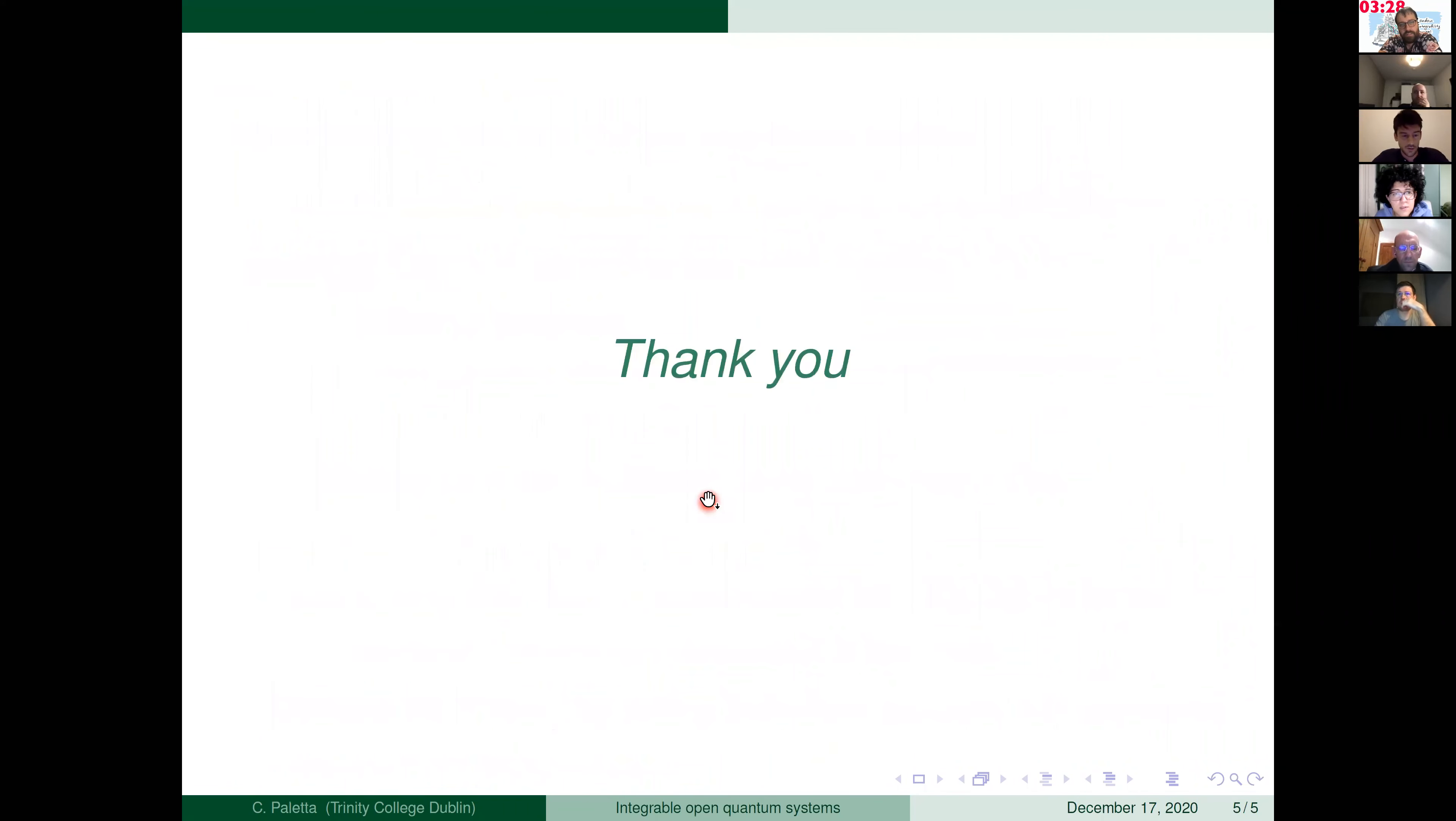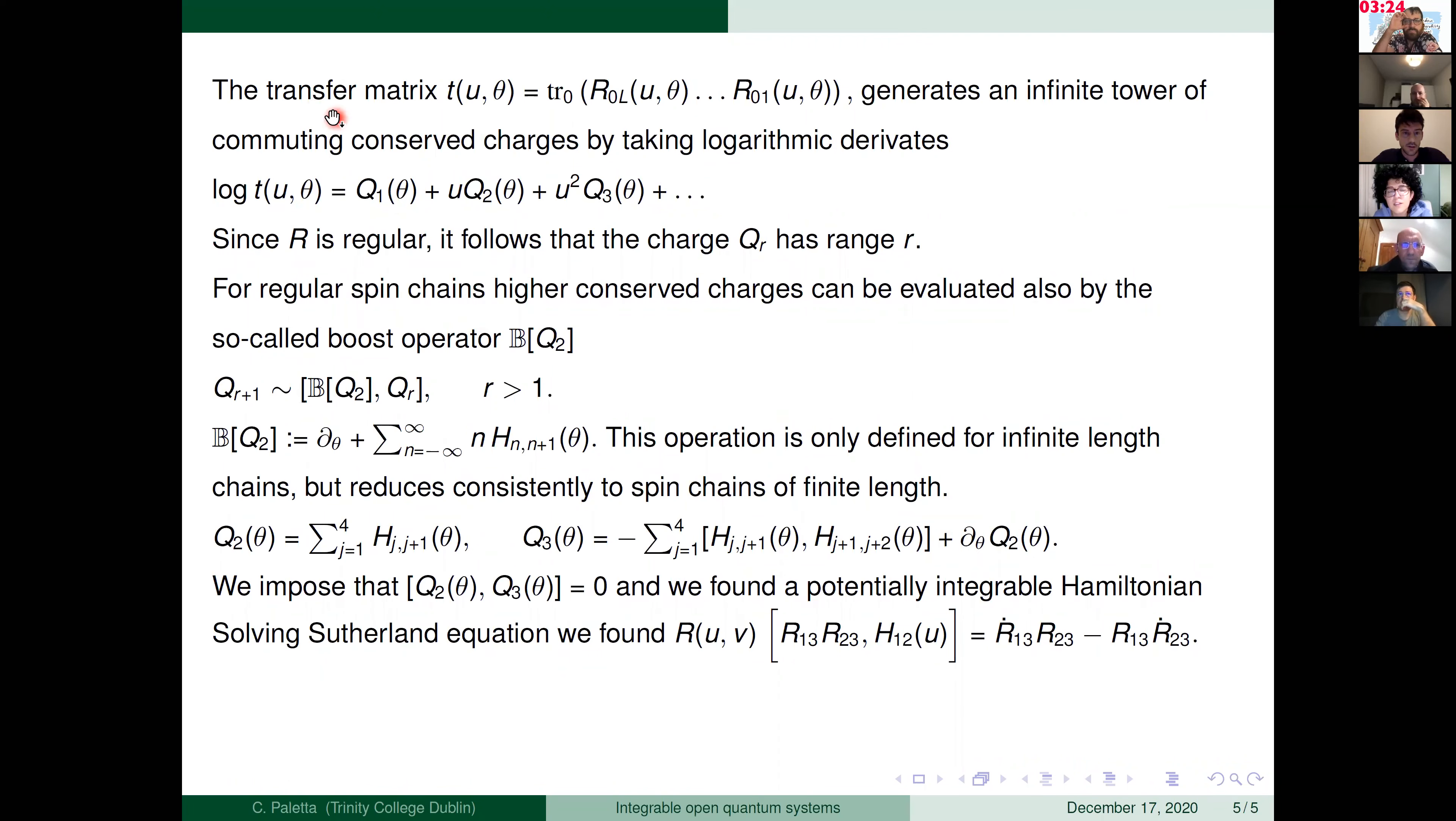My question is... Sorry, I just put on some backup so it will be easy to show. So the idea is that from the transfer matrix, we can construct all the conservative charges. But if we have an R matrix that is regular, that means if you evaluate the R and the two spectral parameters will be the same, this is equal to the permutation operator. If R follows this property, the conservative charges can also be constructed using this boost operator. So the B in particular is defined in this way. But as you can see, this only works if the chain is infinite dimension. But it works also consistently if you reduce, for example, for a length four, the explicit form will be the following.